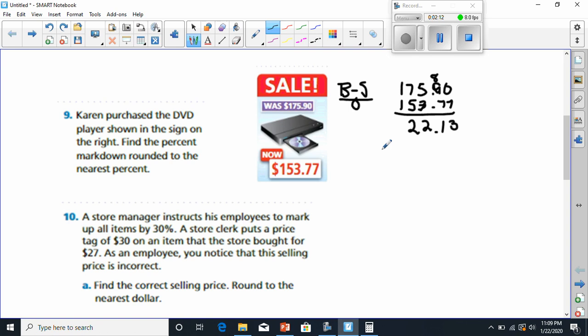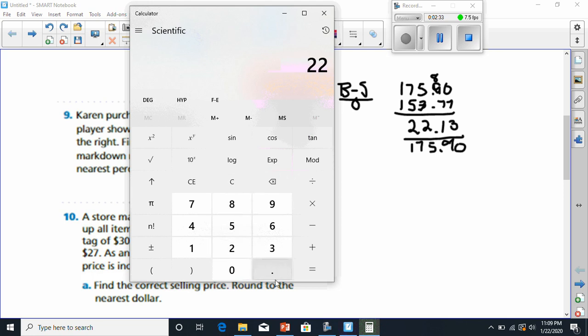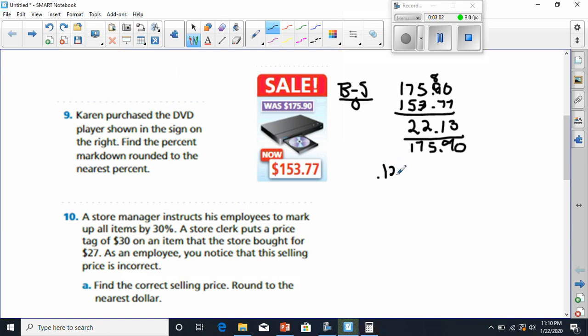So that means when we're finding the percent, we realize that is the difference on top. Now we have to divide it by the original number, and that was $175.90. All right, let's check that out in the calculator. It says 22.13. Let's see, we're going to divide by $175.90, and that's going to give us 12.58. That does say to round to the nearest percent, so when we move this over, this becomes 12.58. If we round up, it's going to be 13%.